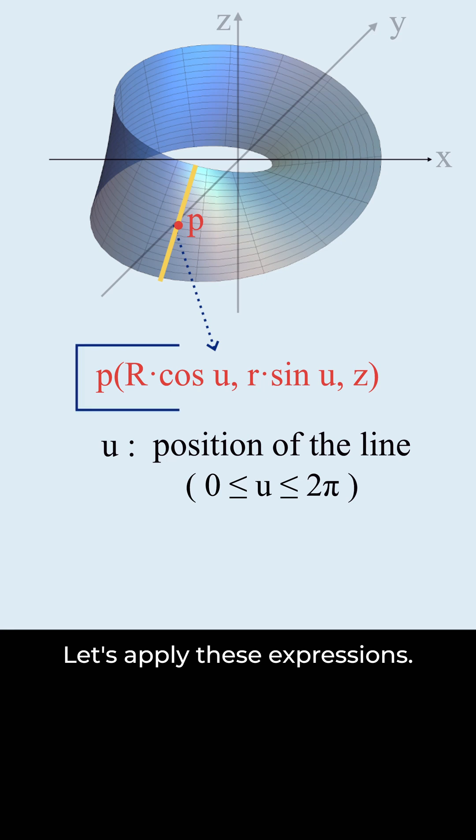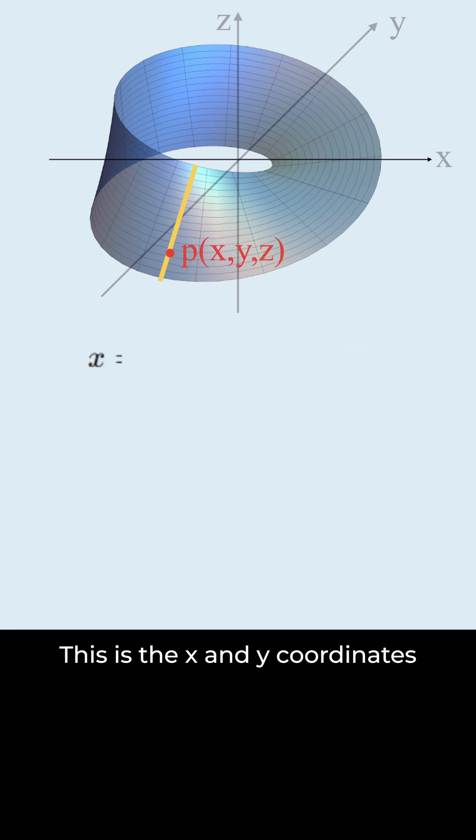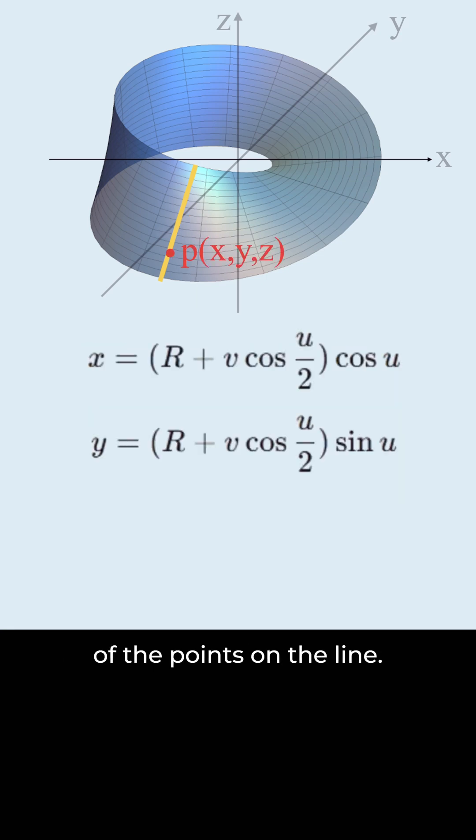Let's apply these expressions. This is the x and y coordinates of the points on the line. This part ensures that all points are represented. v is a variable. Negative v represents points on this side of the line. Positive v represents points on the other side.